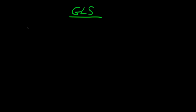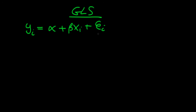So what does generalized least squares actually mean? Let's say we have some model y = α + βxi + ei. And instead of specifying the normal conditions under the Gauss-Markov theorem — namely homoskedastic errors and no serial correlation — we're going to specify two different conditions on this error term.